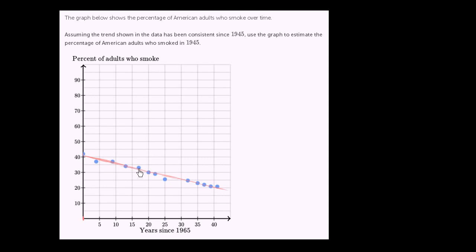When I say it's a negative linear relationship, we see that as time increases, the percentage of smokers in the US is decreasing. So that's what makes it a negative relationship. Now what are they asking? They want us to estimate the percentage of American adults who smoked in 1945.